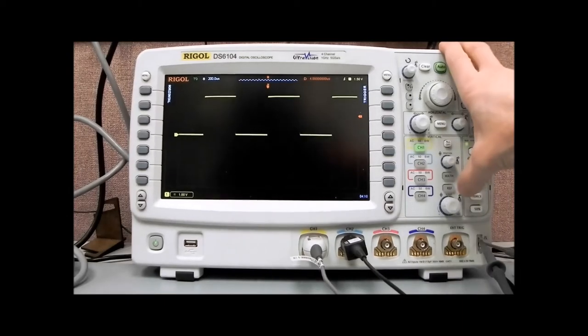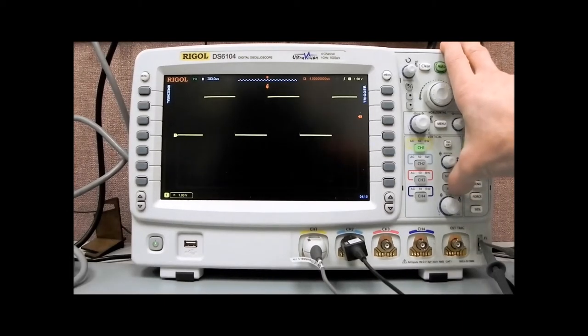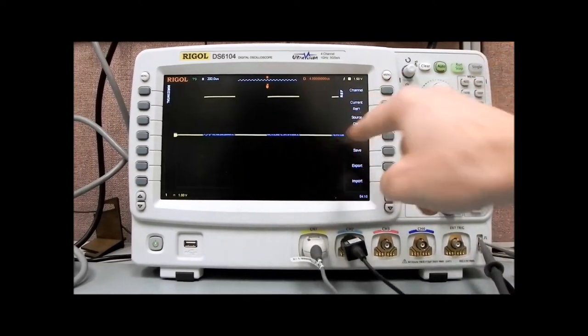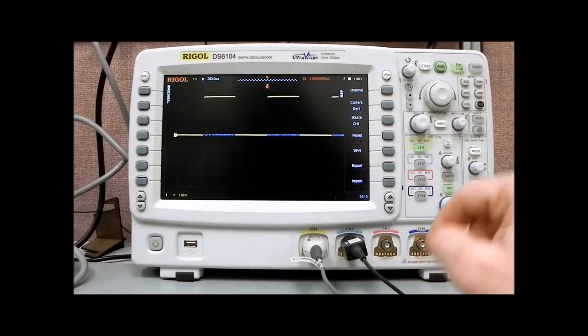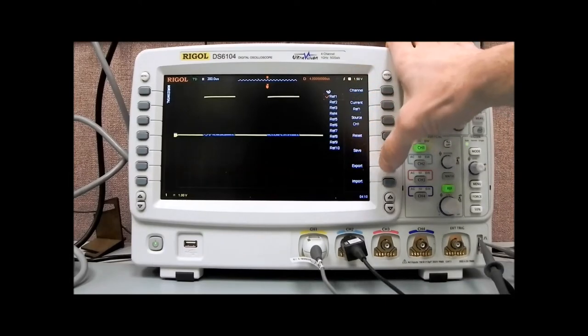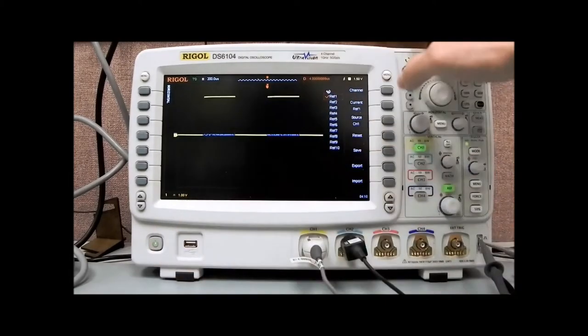With the DS6000, I'd like to show the reference waveform feature. We can pull up the reference menu here with the reference key. You'll see now there's a white dotted line that was saved earlier. With the references we can save up to 10 internally, and we can also save externally via USB.